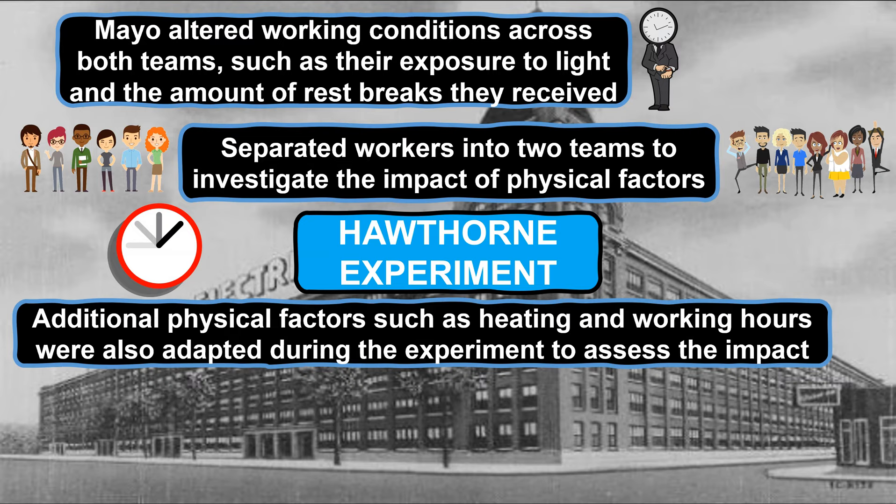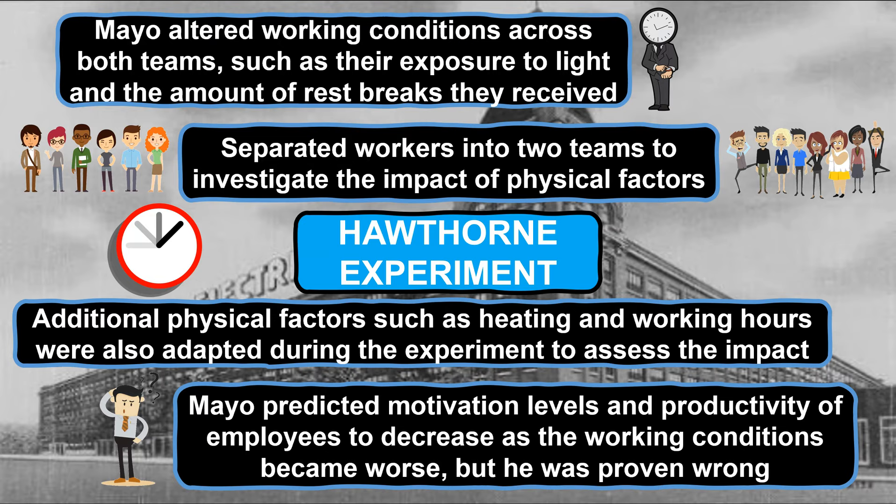Mayo predicted that the motivation levels of employees would decrease as the working conditions became worse, which would then have a negative impact on their productivity. However, he was surprised to find that his prediction was wrong. Changes to the working environment such as decreasing the amount of light that employees were subjected to during the experiment actually had no detrimental impact on their motivation or productivity. In fact, productivity levels improved or at the very least remained the same.